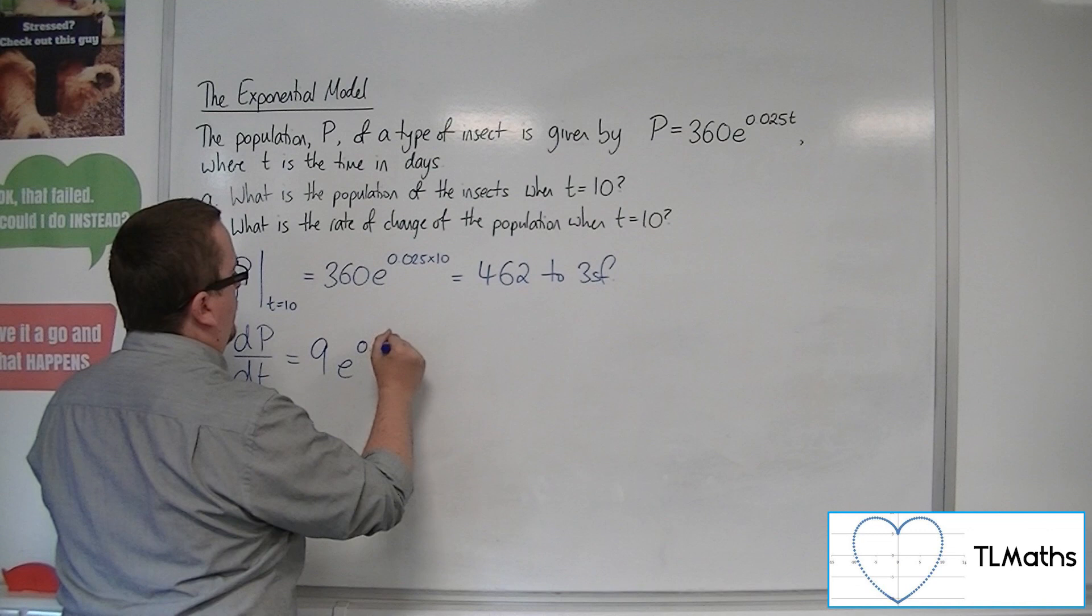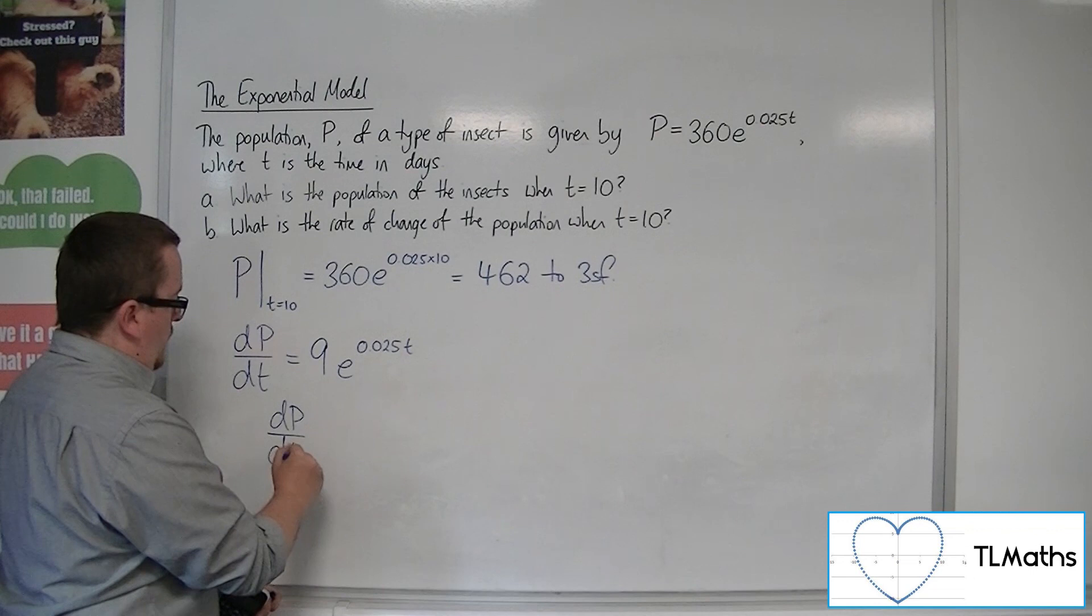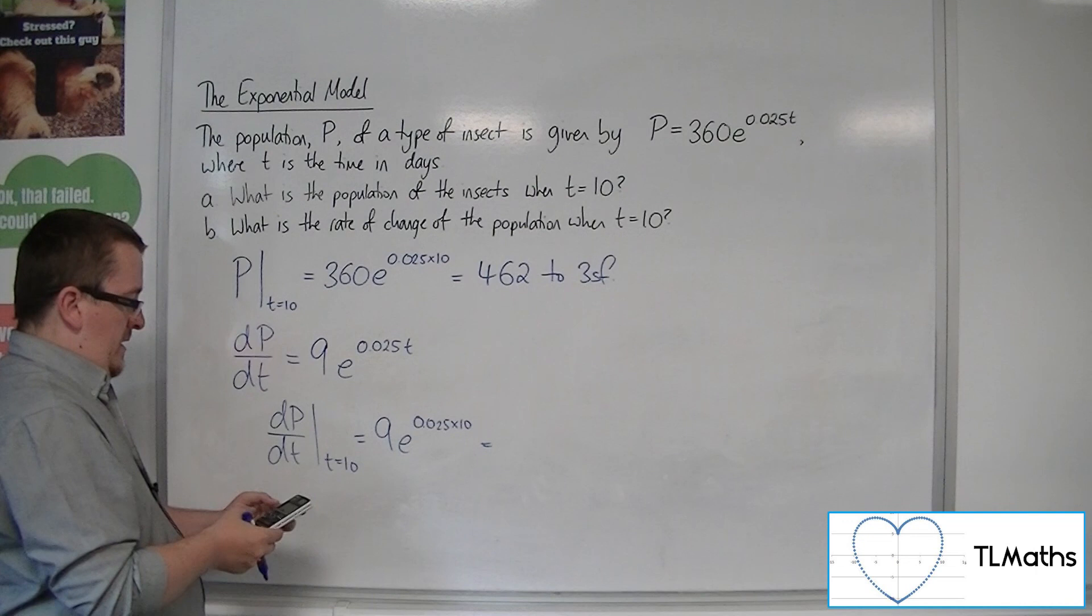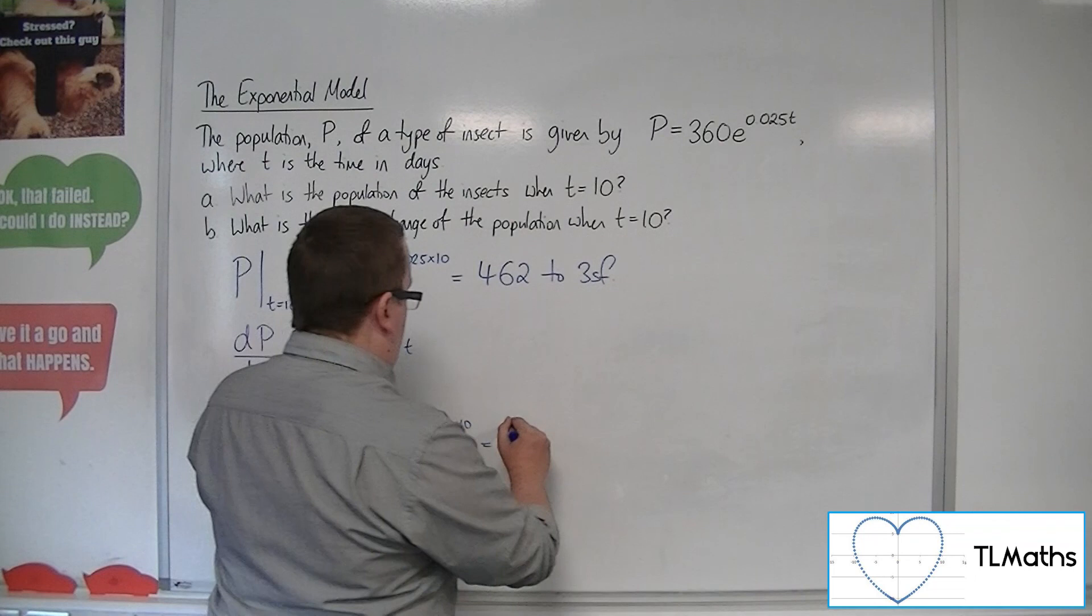So to evaluate that when t is 10, will be 9e to the 0.025 times 10. So 9 times e to the 0.025 times 10 is 11.55622875.